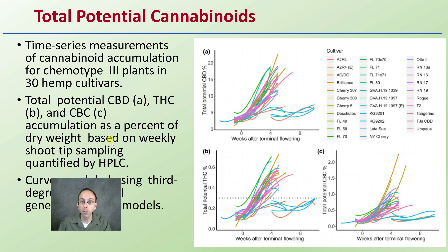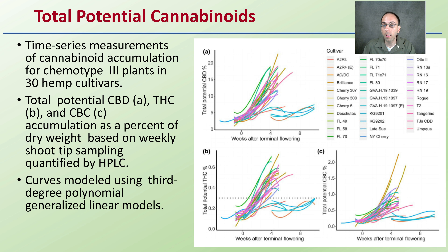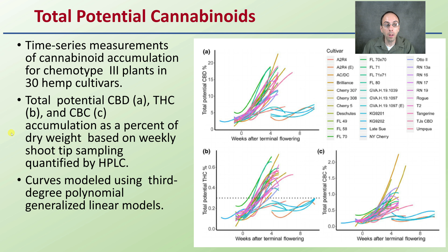Now, total potential cannabinoids — when we're looking at some trends here, what's great is that they actually sectioned out different cultivars. This is a time series measurement of cannabinoid accumulation for chemotype 3 plants in 30 hemp cultivars. Total potential CBD, THC, and CBC accumulation as a percent of dry matter, based on weekly shoot tip sampling qualified by HPLC.